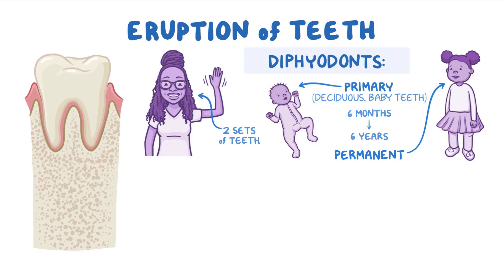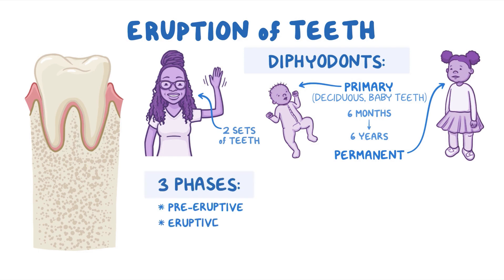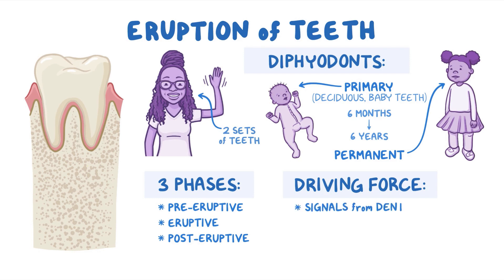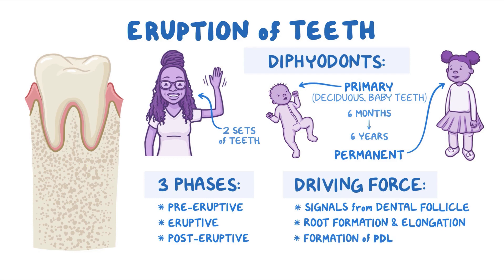Tooth eruption occurs in three phases: the pre-eruptive, eruptive, and post-eruptive phase. The driving force behind the eruption of teeth is still unknown, but is thought to be due to a combination of a few factors, which include signals originating from the dental follicle, root formation and elongation which could drive the tooth in order to acquire space within the jaw, and formation of PDL which provides an occlusal force aiding in eruption.